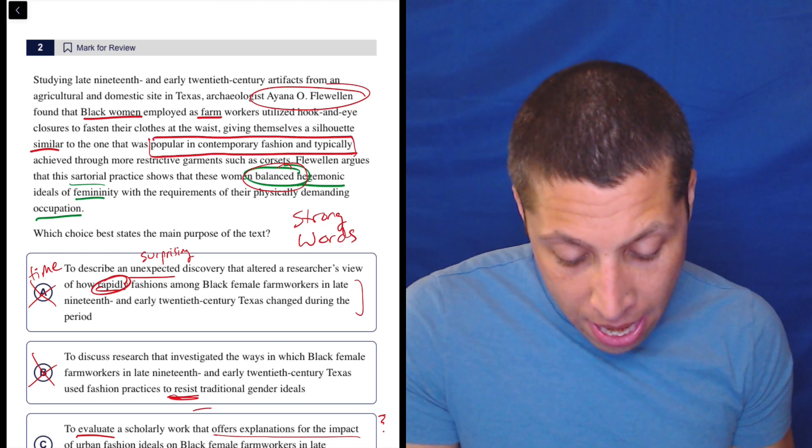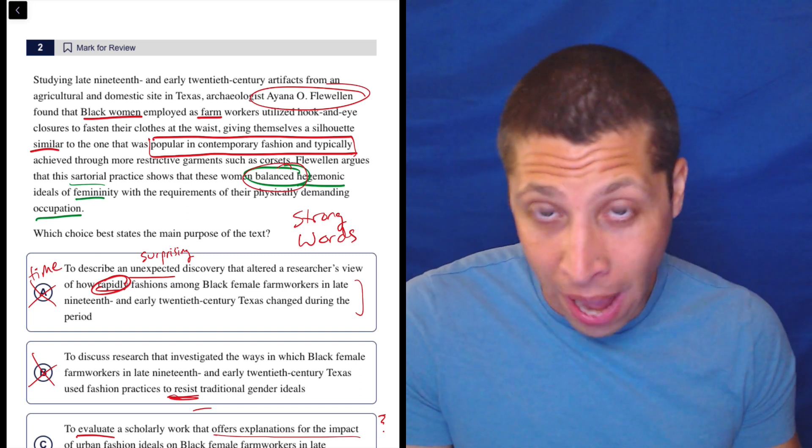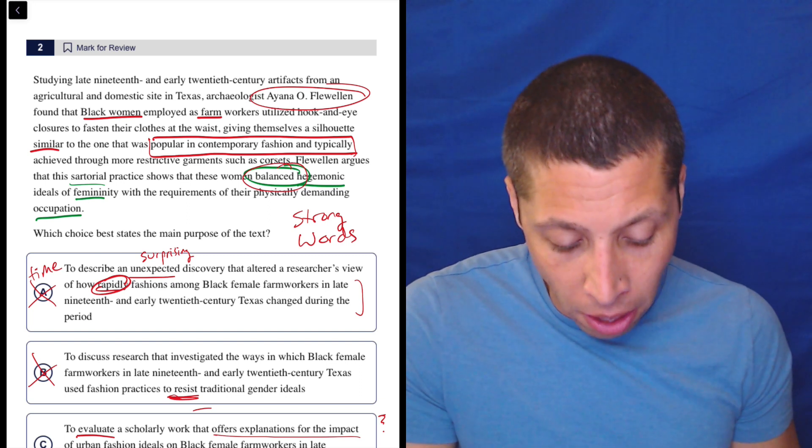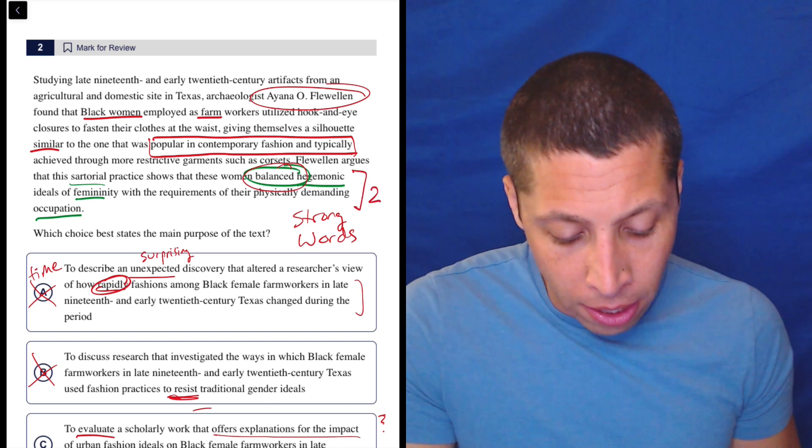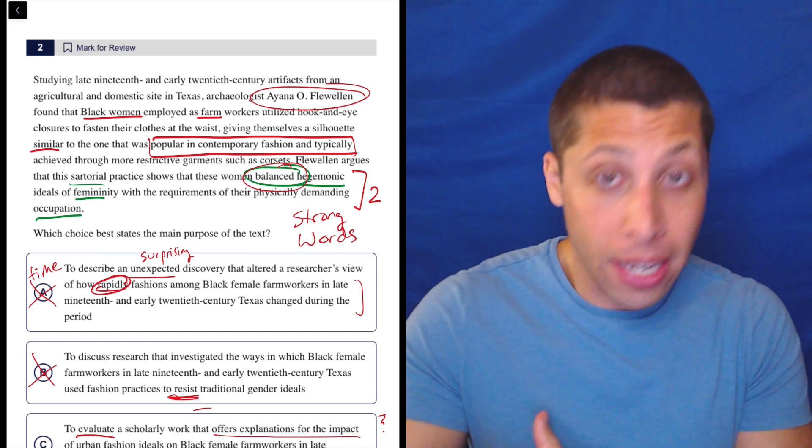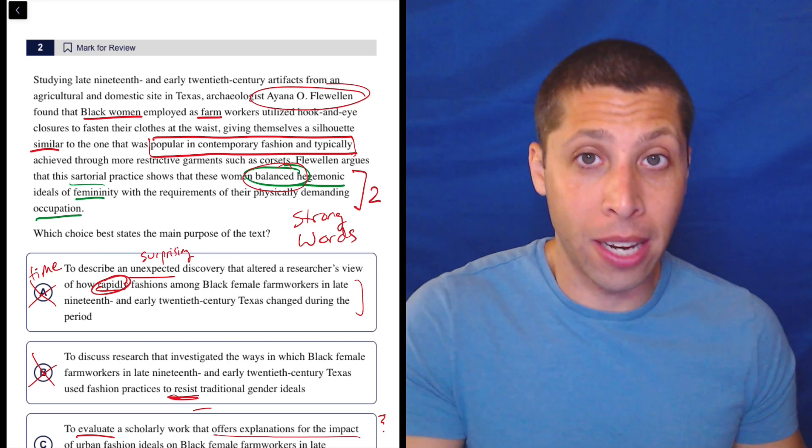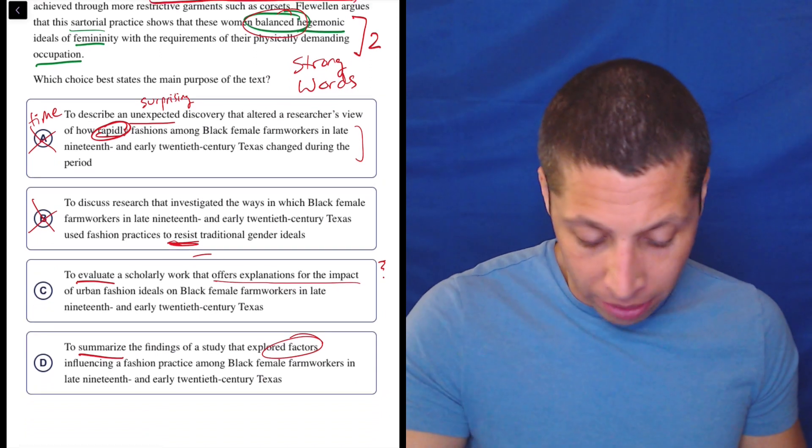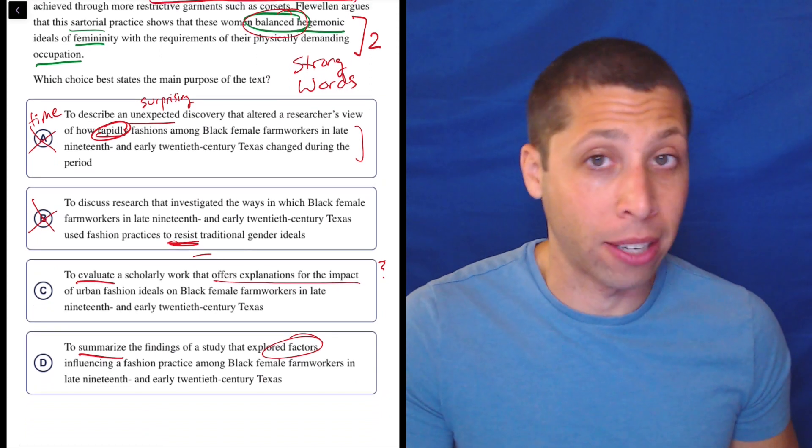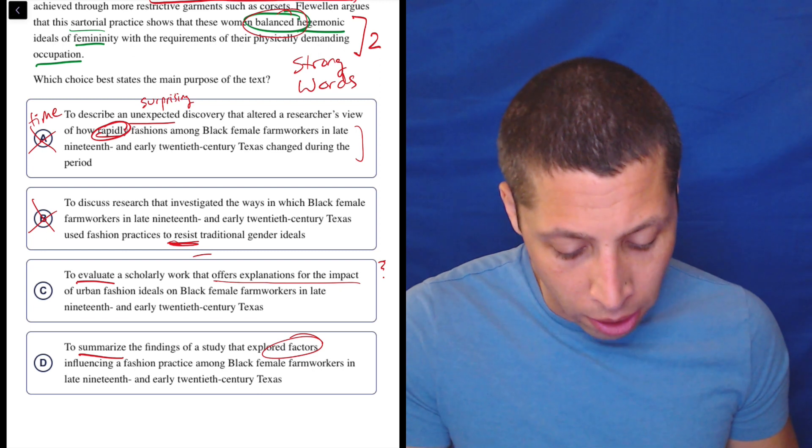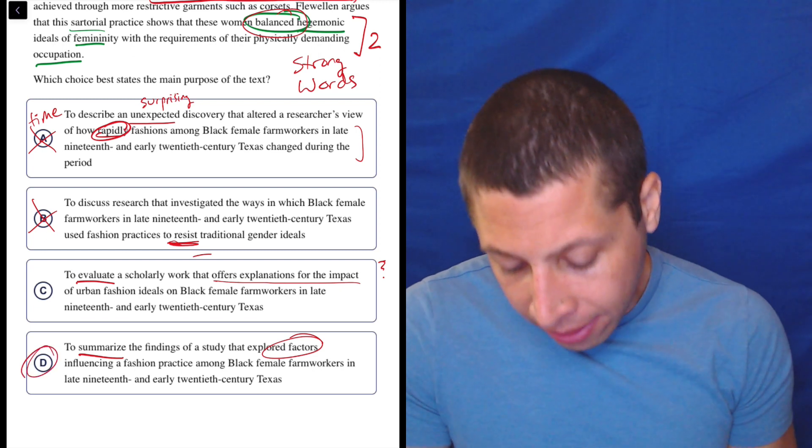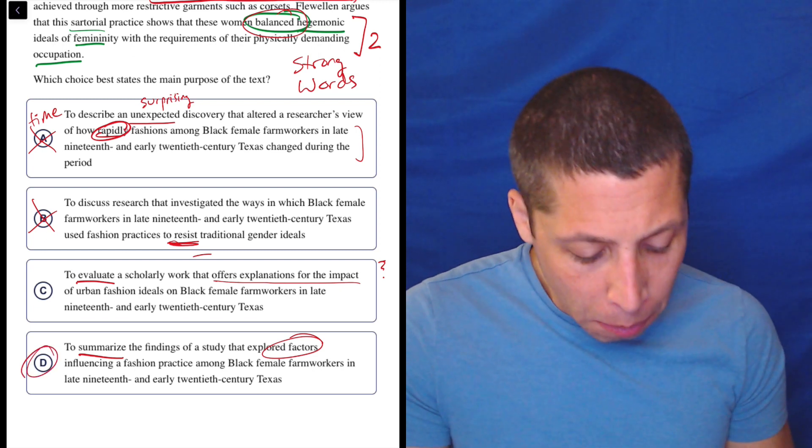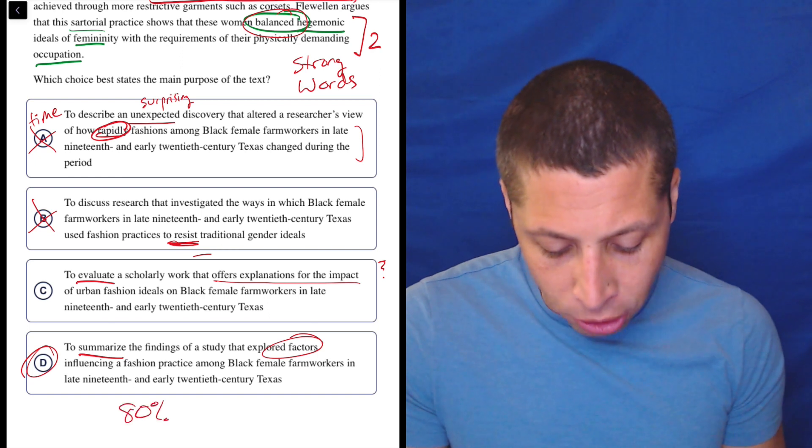And then another two factors are down here, right? That they had to balance femininity with their physically demanding occupation. So those are other factors that influenced the fashion practice of what these black farm workers wore. So I don't know. I like D here. I'm probably like 80% sure that it's D. So this might be a question where I would come back and just kind of see like, maybe I'm missing something.